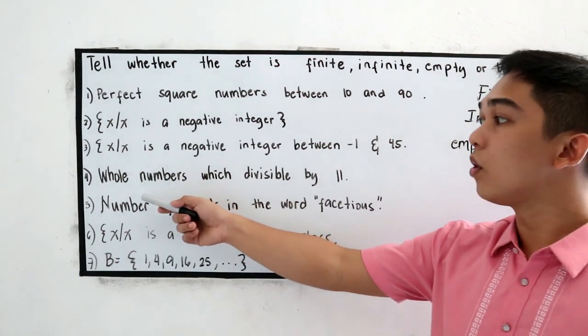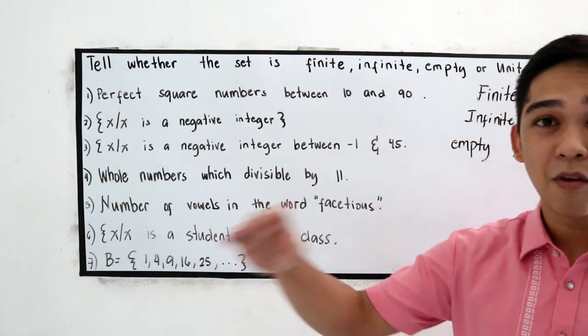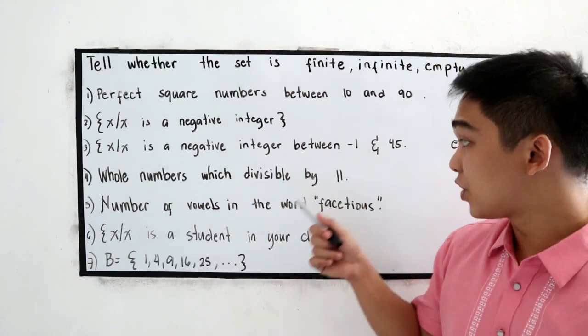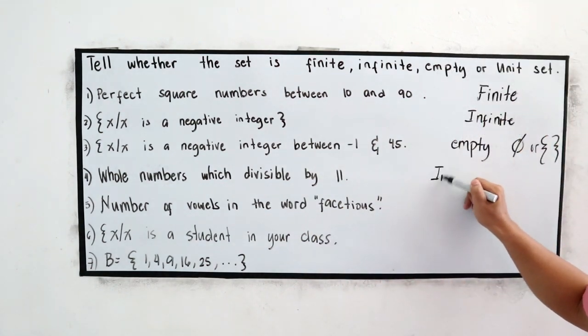Number four. Whole numbers which divisible by 11. So, we have a plenty of whole numbers which is divisible by 11. So, we cannot count. So, that is infinite.